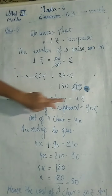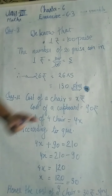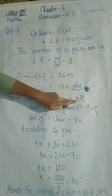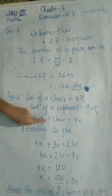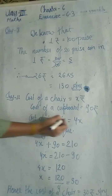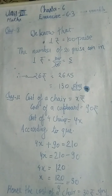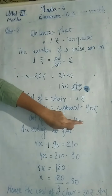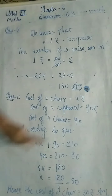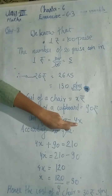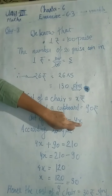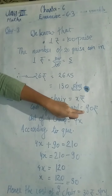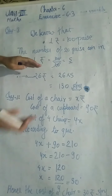Kyunki yahan x diya hua hai, ussse bahut confusion ho sakta hai. Cost of a chair kitna hai? X rupees hai. Toh aap batao — cost of 4 chairs kitna hoga? 4x. 4 ka multiply ho jaayega — iska matlab multiply hai. Cost of a cupboard kitna hai? 90 rupees — yeh diya hua hai, question mein given hai.